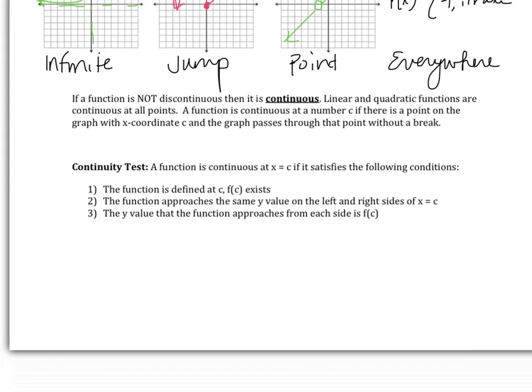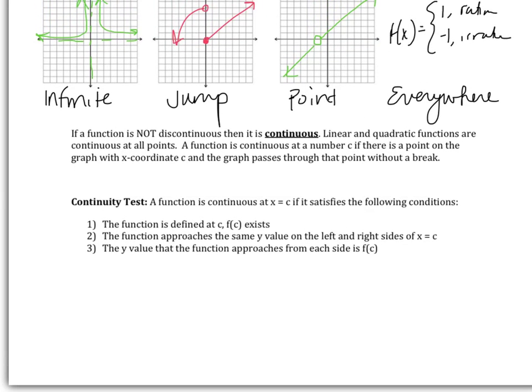If a function is not discontinuous, then it is continuous. Linear and quadratic functions are continuous at all points. So parabolas and lines, cubic functions. The formal definition of continuous is a function is continuous at a number c if there is a point on the graph where the x-coordinate c and the graph passes through the point without a break.